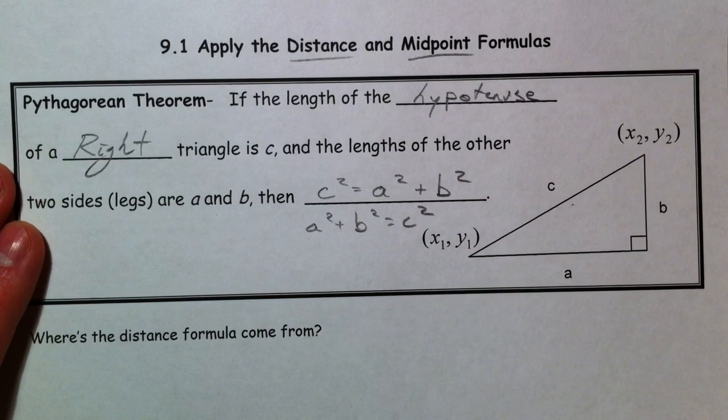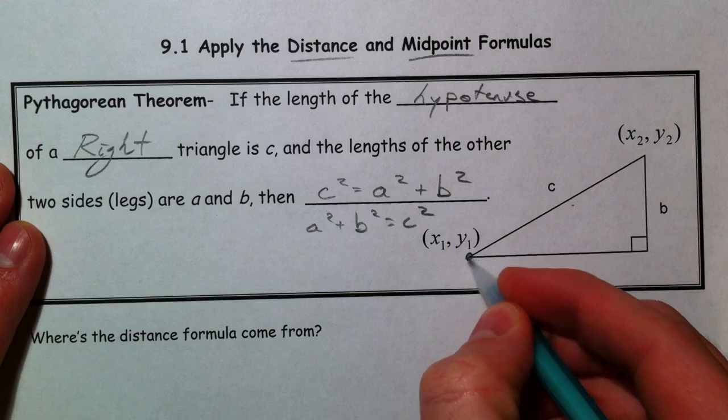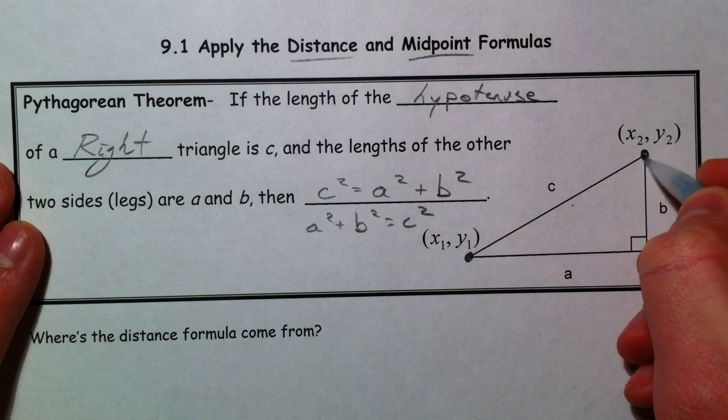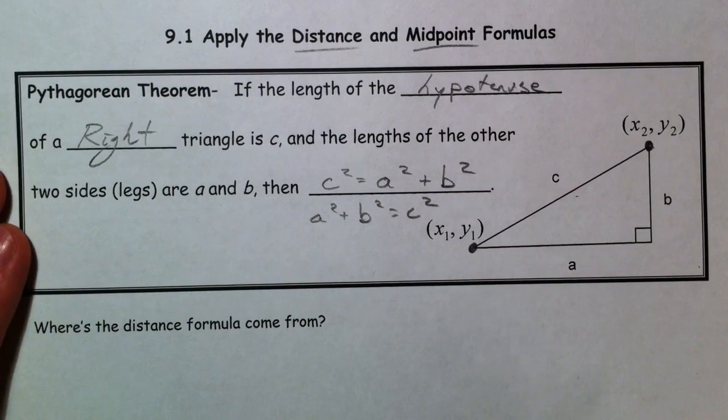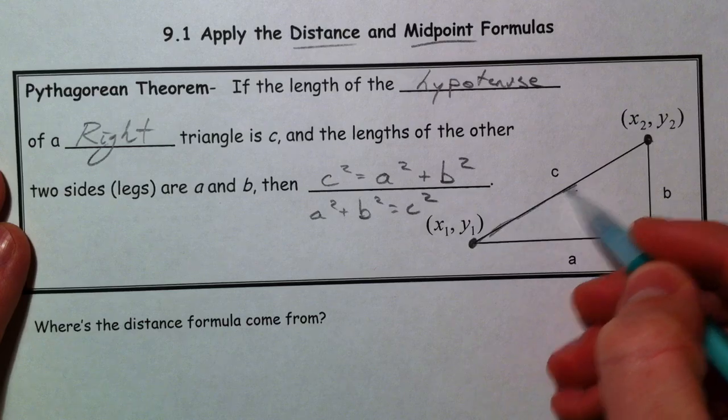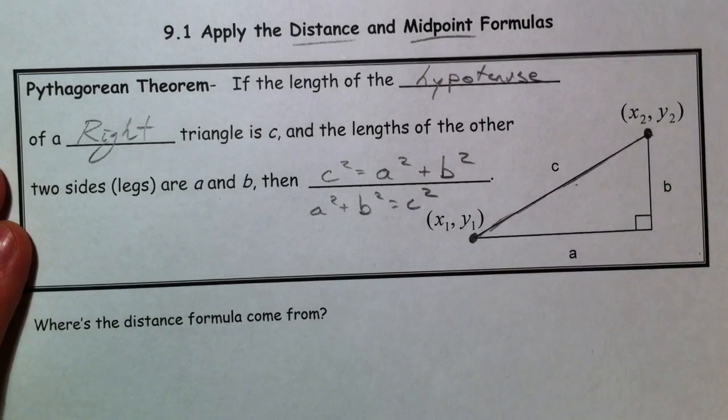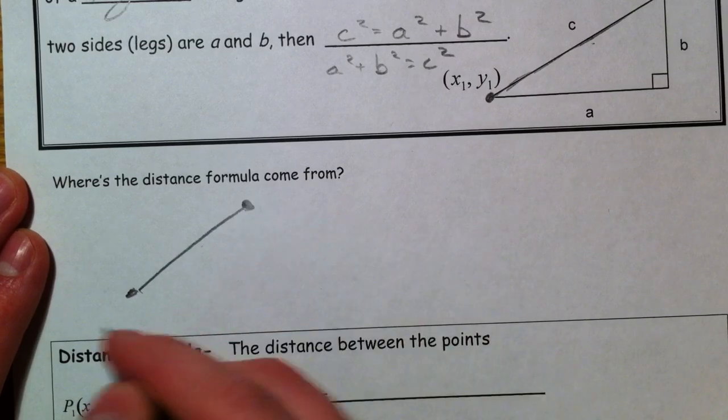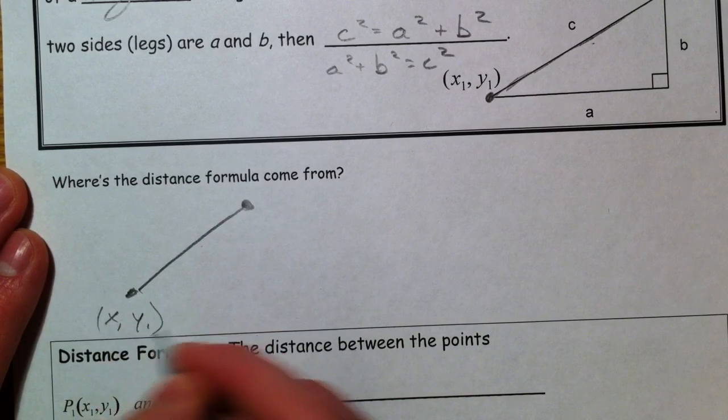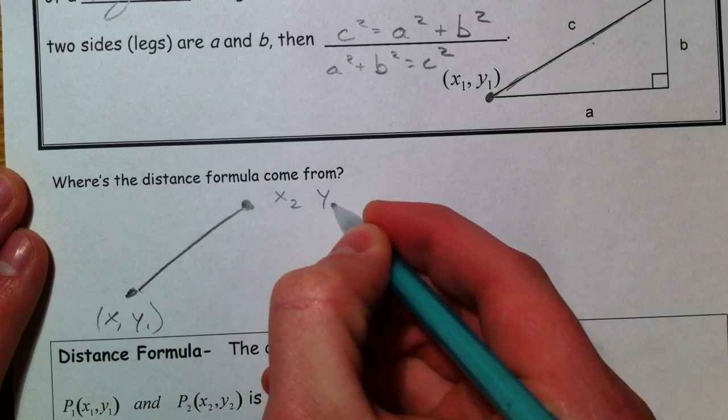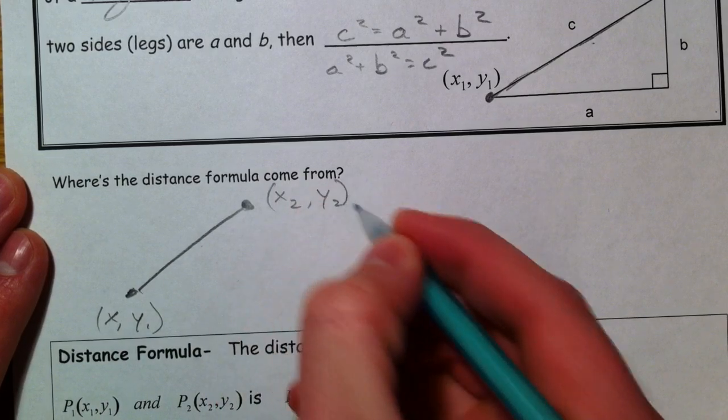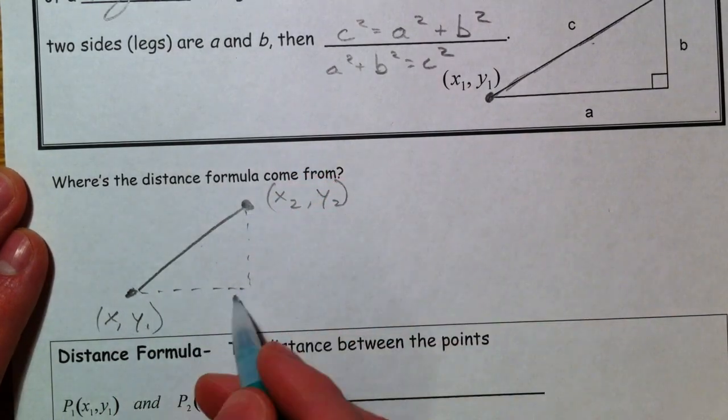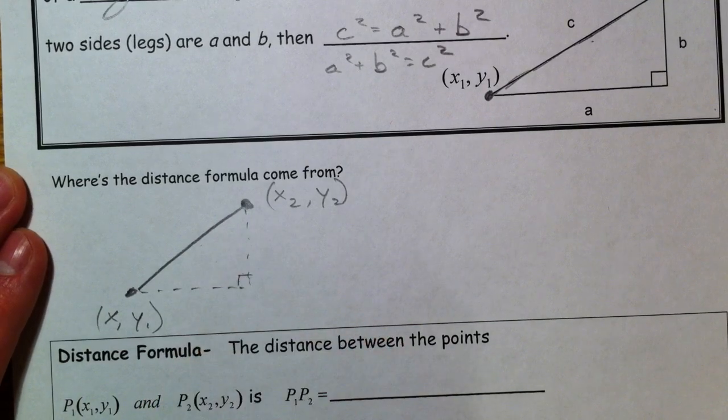So where does the distance formula come from? Let's pretend that we have some point (x₁, y₁) and (x₂, y₂) right here, and we want to find the distance between them. In other words, c. So I'm going to transfer this picture down here. It's going to be one point (x₁, y₁) and another point (x₂, y₂). And so the point is: let's turn this into a right triangle situation by finding how far to the right did we go and how far up did we go.